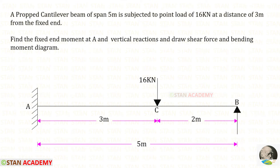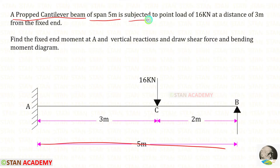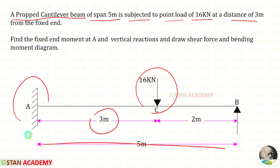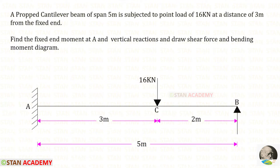Hello everyone. Today we are going to analyze this beam using the strain energy method. A propped cantilever beam of span 5 meters is given. The beam is subjected to a point load of 16 kilo Newton at a distance of 3 meters from the fixed end. In this question we have to find the fixed end moment at A, the vertical reactions, and then draw the shear force and bending moment diagrams.